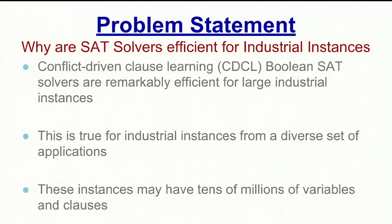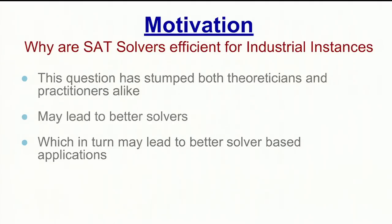One scenario where SAT solvers are particularly efficient is with industrial instances — examples of which are code that's been converted into SAT formulas. We found this is true for instances taken from a diverse set of applications, and in some cases they have tens of millions of variables and clauses, so we don't think this is purely based on the size of the formula. We're not entirely sure why these instances are so efficient when they're so huge. Answering this question may lead to better solvers and better solver-based applications.